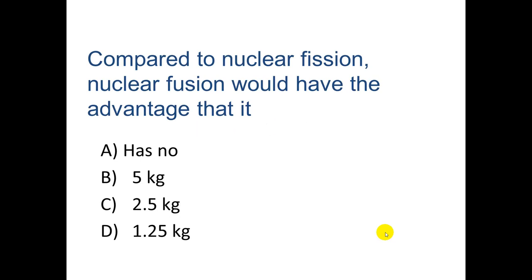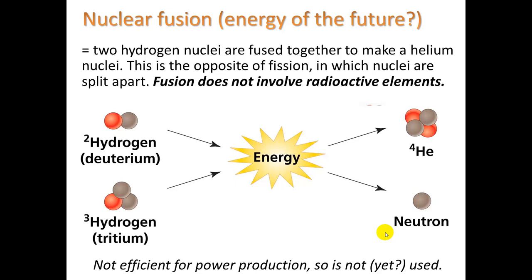Nuclear fusion: compared to nuclear fission, in fusion you take two hydrogen atoms, smash them together, and they make helium, releasing a large amount of energy. The nice thing is that it does not involve radioactive elements — this is what happens in the sun. The challenge is that you need an extreme amount of heat to begin with in order to get the two atoms to fuse. The two hydrogens used are special isotopes: deuterium, which is hydrogen with one extra neutron, and tritium, which is hydrogen with two extra neutrons. Maybe someday in the future we'll have clean fusion energy.